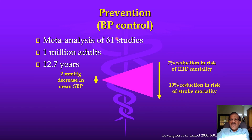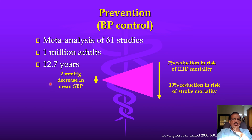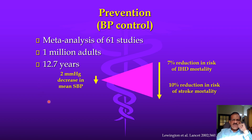Prevention by focusing on risk factors: regarding hypertension, a meta-analysis of 61 studies involving more than one million adults over a 12.7-year period showed that just a 2 mmHg reduction in systolic pressure leads to a 7% reduction in risk of ischemic heart disease mortality and a 10% reduction in risk of stroke mortality. In real life, patients may have blood pressure of 180/110, so reducing by 40 or 20 mmHg would bring substantially greater benefit.